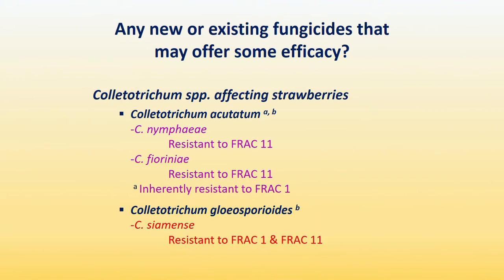These are the species we identified so far from the anthracnose isolates. We're dealing with two different species complexes: Colletotrichum acutatum and Colletotrichum gloeosporioides. Under acutatum, there are two species — nymphaeae and Fiorinii. Under gloeosporioides, Colletotrichum siamense. We have detected resistance in those two species to FRAC 11. The acutatum complex is naturally resistant to FRAC 1, to TOPSIN-M. And for gloeosporioides, we found resistance to both strobilurins and TOPSIN-M. So you can say either FRAC 11 or FRAC 1 will not do much for anthracnose management.